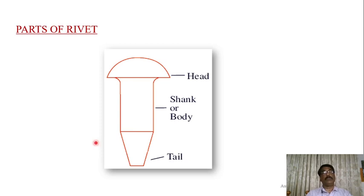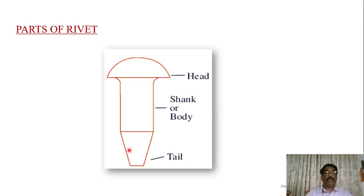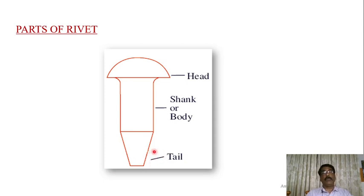There are two types of riveting process: hand riveting and machine riveting. In hand riveting, the blow is applied to the tail by a manually operated hammer, used for small jobs. In machine riveting, the hammer is operated by a machine — steam, hydraulically, or pneumatically operated — and is used for large works.